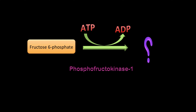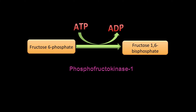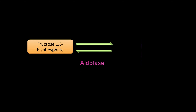Fructose-6-phosphate: this is the big enzyme in glycolysis — PFK1. It is the main regulatory enzyme of glycolysis and it is the second priming reaction, where you consume one molecule of ATP. Your product is fructose-1,6-bisphosphate.